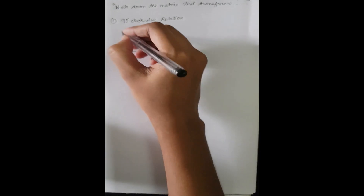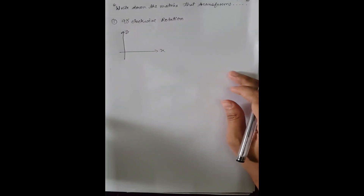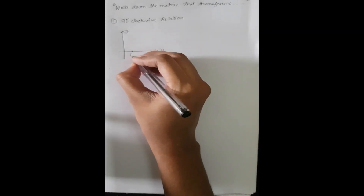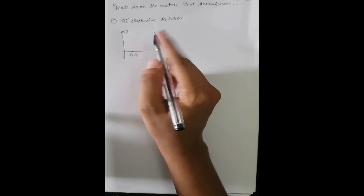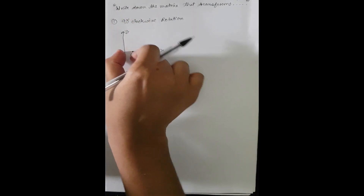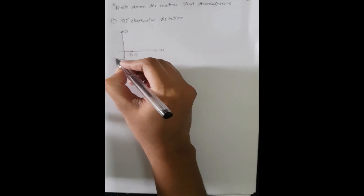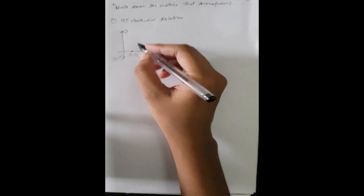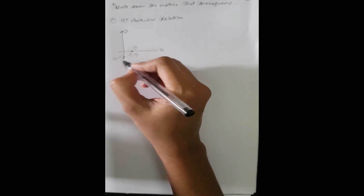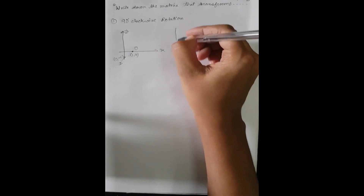Suppose this is your x-axis and this is your y-axis. We will consider a unit coordinate for x, so (1, 0) — this is your initial point. After rotating this point clockwise 90 degrees, it will come to (0, -1). So the initial point was your object and the final point is your image.